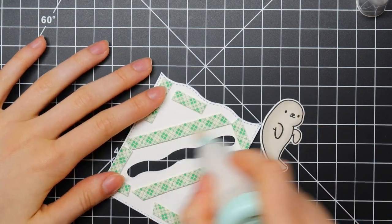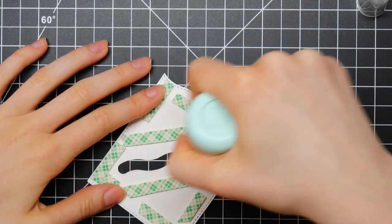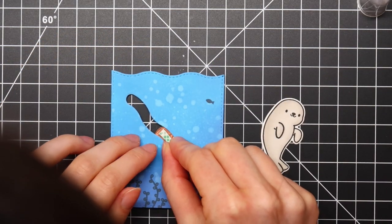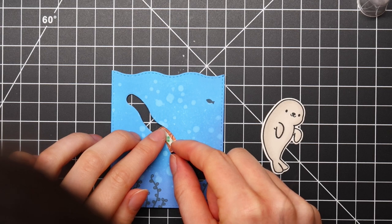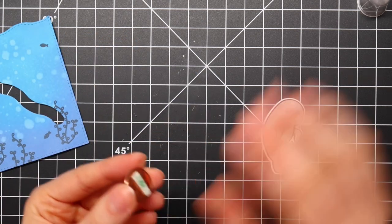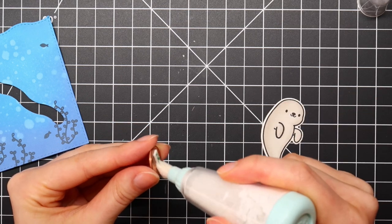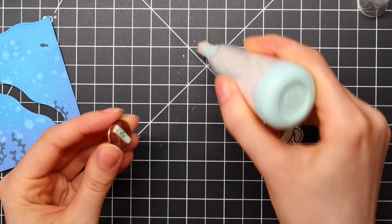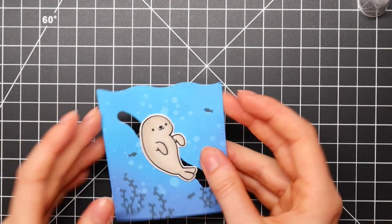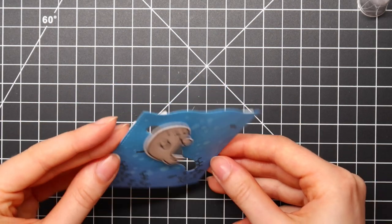I'm also going in with my powder tool just to remove some of that stickiness on the edges of my foam tape. And then I am using a teeny tiny piece of foam tape on my coin so that my little seal can move back and forth. I'm also going in with my powder tool just to remove some of that stickiness. And then I can adhere my seal and there you go.